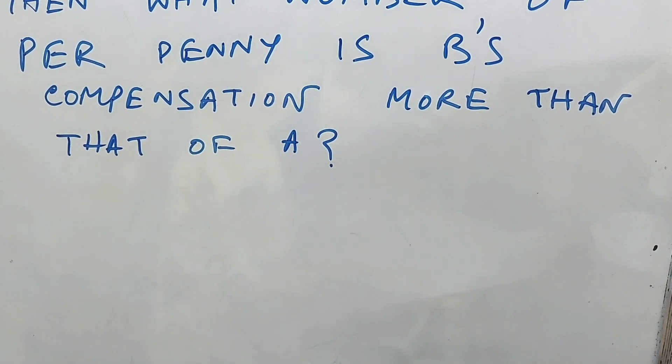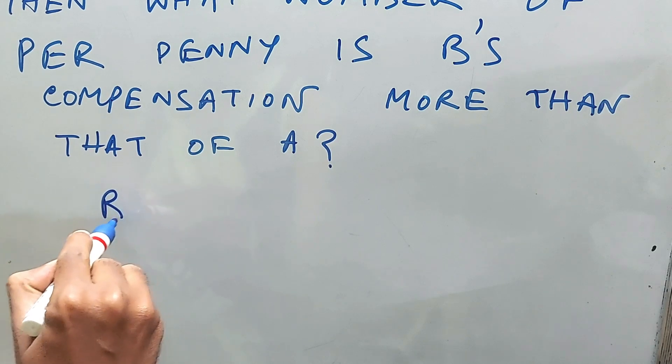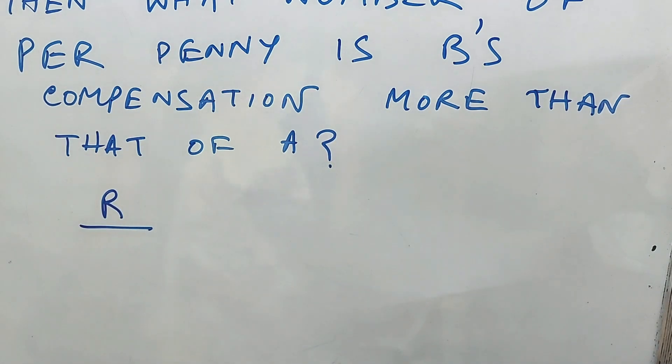This time we are going to do it with the formula only. Simple formula: that is R by 100 plus R. Previously it was 100 plus R because the required percentage was less, right? But this time the required percentage is more, definitely, so that's why it is R by...